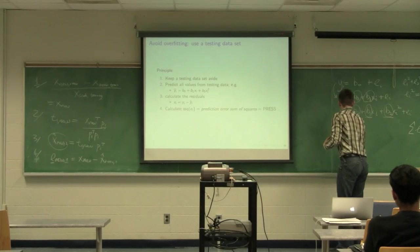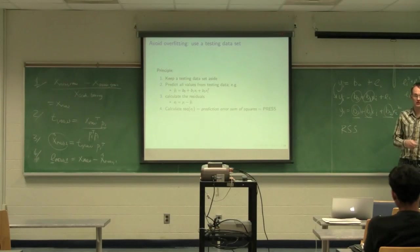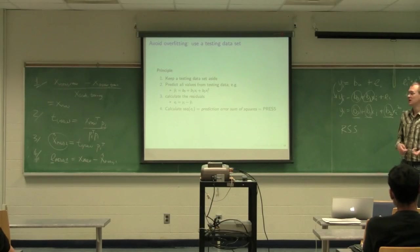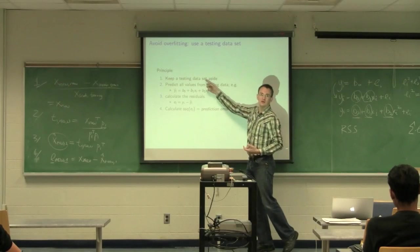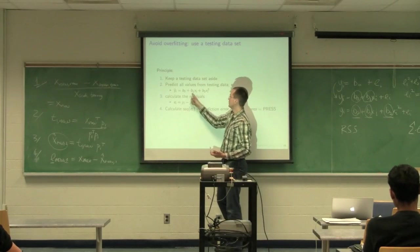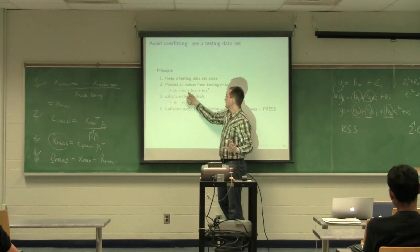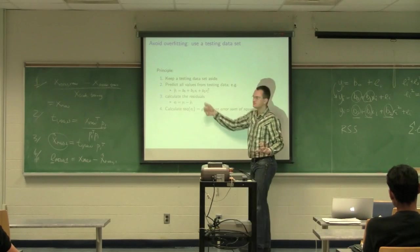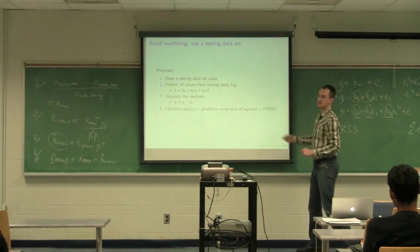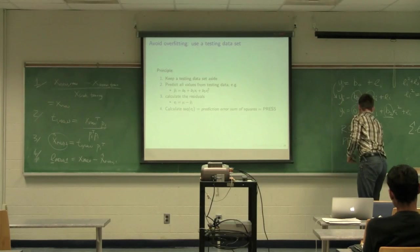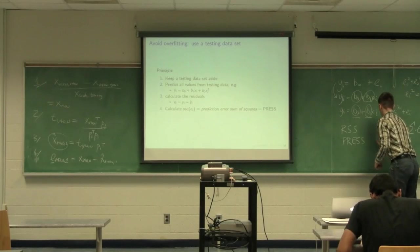So PRESS is calculated on testing data. On data that was not used to build the model. We'll often call RSS the residual sum of squares. That's the residual sum of squares from the data that you used to build the model. PRESS, we call the residual sum of squares from totally new data that was kept aside. So when you built your model, and you calculated b0, b1, b2 in this case, those parameters were calculated from the training data. The testing data were kept aside. So these three values were not influenced by the testing data. Now we're going to bring our testing data in, calculate y_hat, calculate our residuals, calculate the prediction error sum of squares, which we call PRESS. So residual sum of squares is from building the model, and prediction error sum of squares from testing.